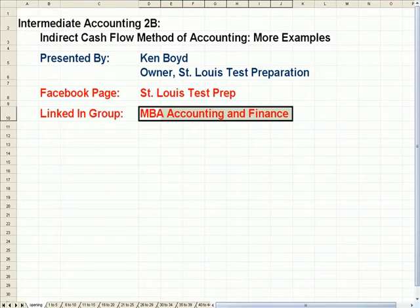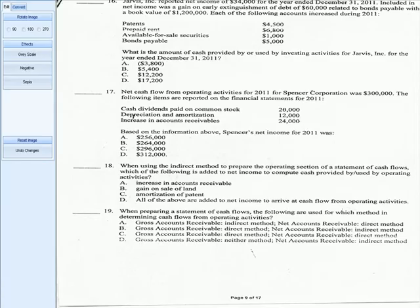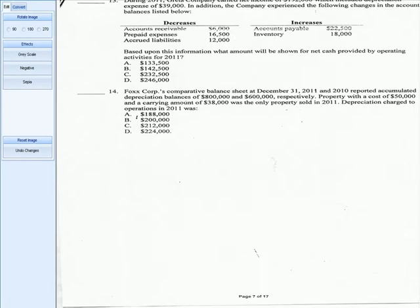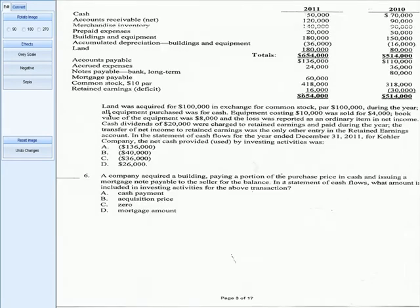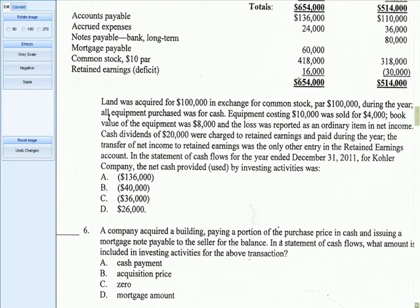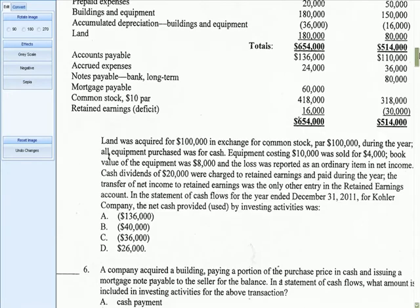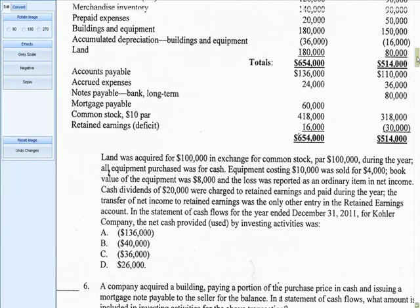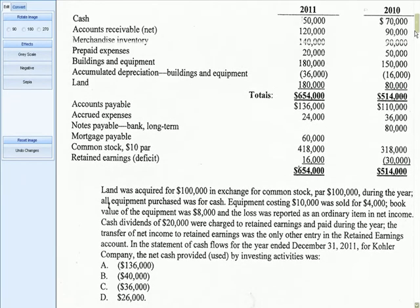I'm going to go over three questions on the indirect method of cash flow that I worked through with a student just a little while ago. I'm going to fit the width here, and what I'm most concerned about is what's on the bottom of the page. There are financials at the top, but I want to look at the detail of the question first.